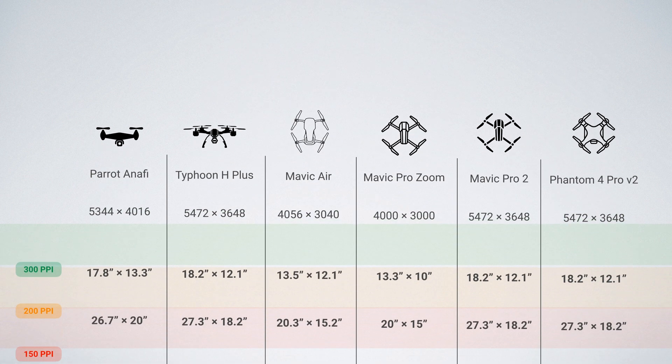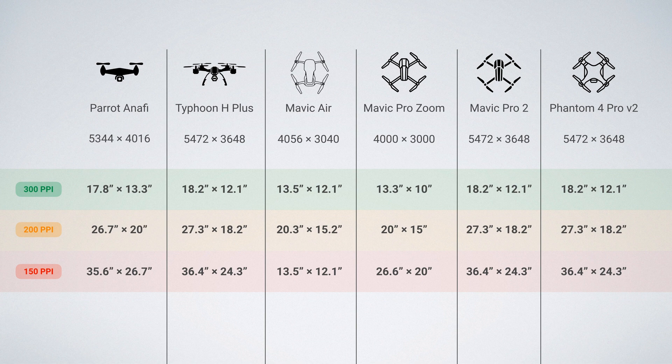Again, to save you some time, here are the print sizes for images taken on popular drones. The largest you can print an image with acceptable quality is about 36 inches by 24 inches.